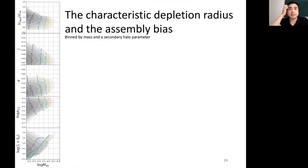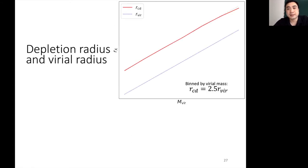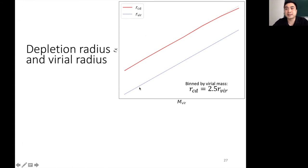For the rest of this talk I'll discuss the characteristic depletion radius as a function of mass, and also as a function of mass and a secondary halo parameter. When I bin halos by virial mass, I get something like this: the dotted blue line is the virial radius, the red line from our simulations is the characteristic depletion radius, and there's a faint black dotted line in the background at 2.5 times the virial radius. We got very lucky — the characteristic depletion radius is actually equal to 2.5 times the virial radius when halos are binned by mass.